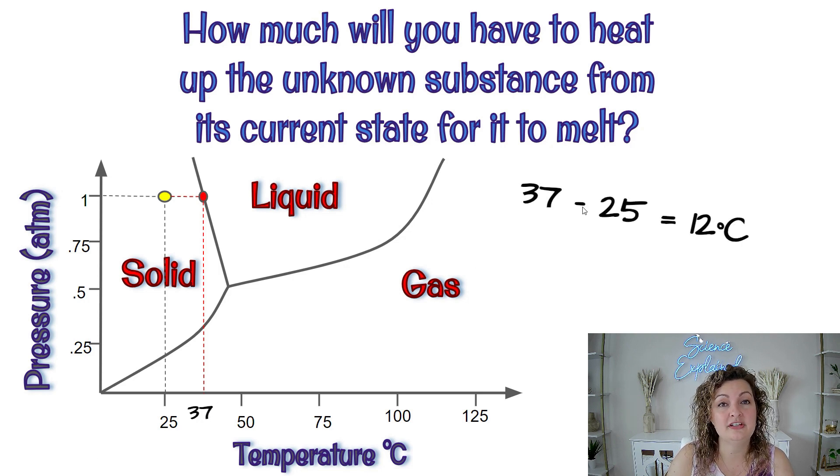So what we're going to do with that is we're going to subtract. We're going to do 37 degrees Celsius minus our 25 degrees Celsius where we started and we end up getting 12 degrees Celsius. So that's how much we would need to increase the temperature in order for it to melt. Let's try another one.